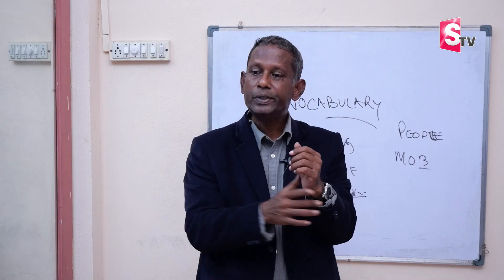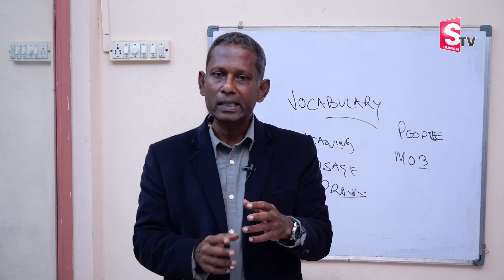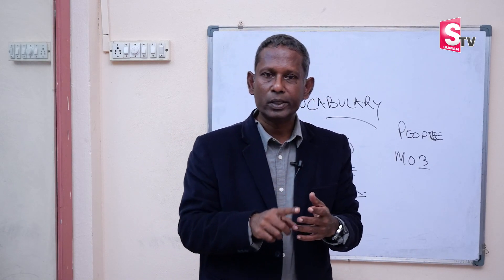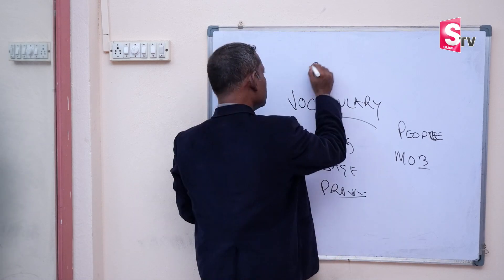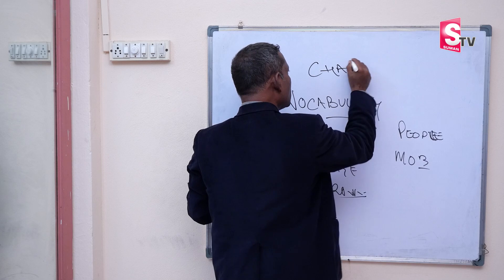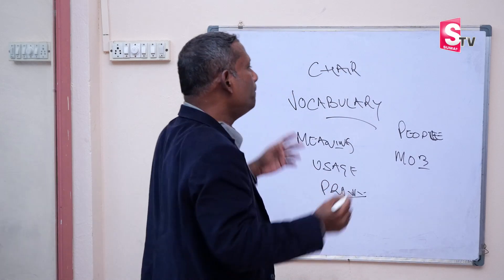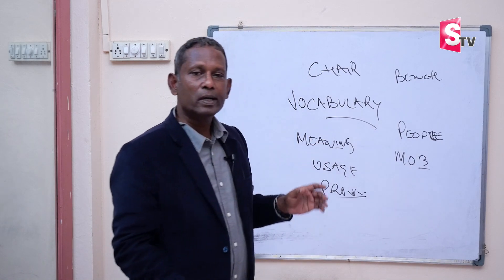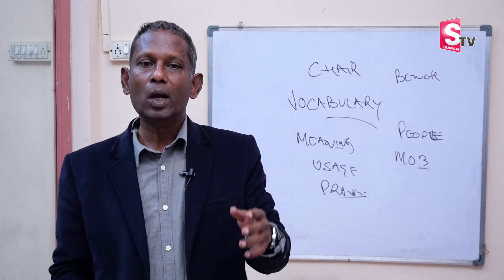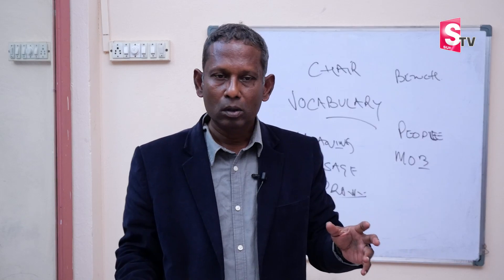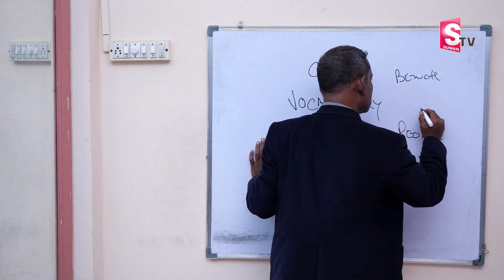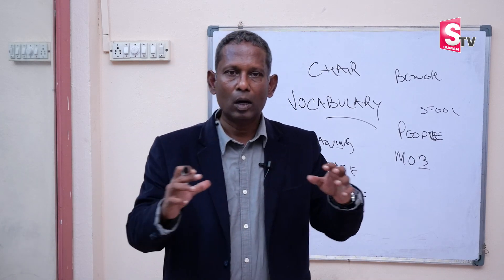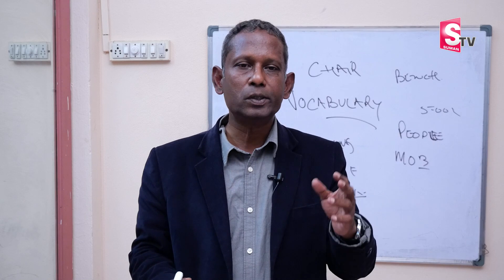The word 'chair' — a chair is a place where you can sit, and it is a noun. You can use it: 'I can have a chair.' Next is 'bench' — a bench is a long chair or stool where two, three, or four people can sit together.